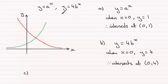Now remember we didn't know which graph related to each equation, but when we found out where they intersect the y-axis, we can see that y equals A to the power x intersected at (0,1) from the very first question.